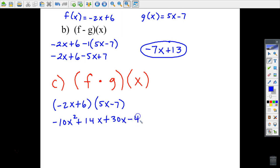And the last together, multiply together, would be minus 42. Combine like terms: negative 10x squared plus 44x minus 42. And that results in our answer for letter c.